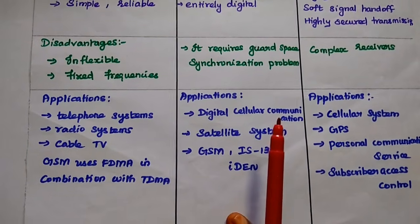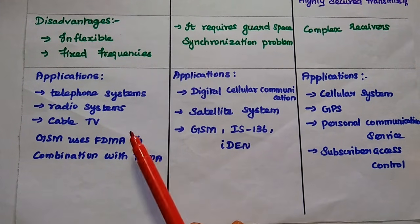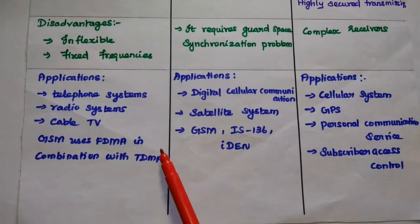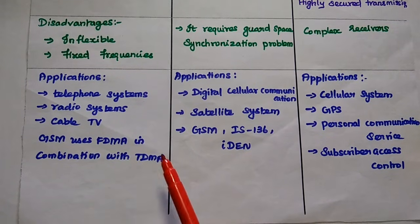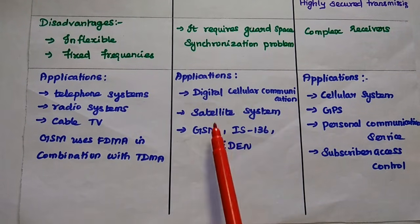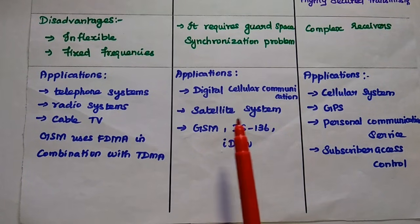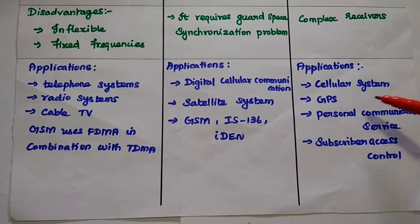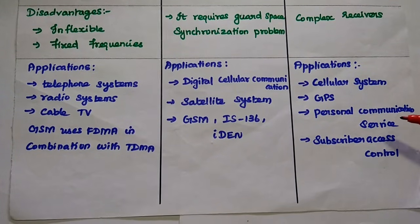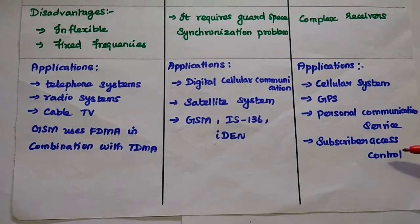Applications of FDMA: it is widely used in telephone systems, radio systems, and cable TV. In GSM, FDMA is used in combination with TDMA. Applications of TDMA include digital cellular communication, satellite systems, GSM, IS-136, and IDEN. Applications of CDMA: it is widely used in cellular systems, GPS, personal communication service, subscriber access control mechanisms, as well as military satellite communication for secure transmission.